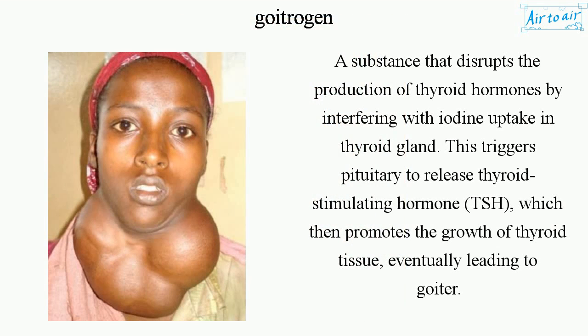A goitrogen is a substance that disrupts the production of thyroid hormones by interfering with iodine uptake in the thyroid gland. This triggers the pituitary to release thyroid-stimulating hormone (TSH), which then promotes the growth of thyroid tissue, eventually leading to goiter.